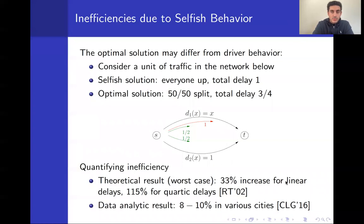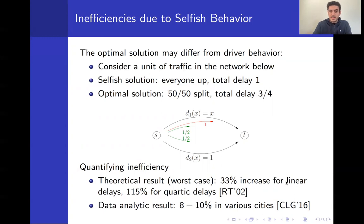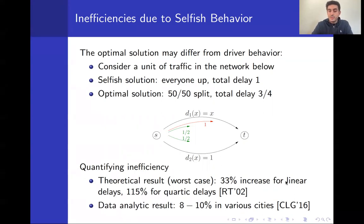Under this model, it is known that the solution reached by selfish drivers, who seek to optimize their individual travel time, is not necessarily aligned with what is optimal for the road network. Consider this simple example: we have two nodes, origin S and destination T, with a unit of traffic flow. There are two options — the top link, which has a congestion-dependent delay equal to the fraction of traffic using it, and the bottom link, a fixed one-hour delay independent of flow.